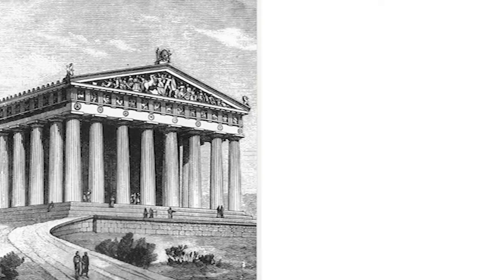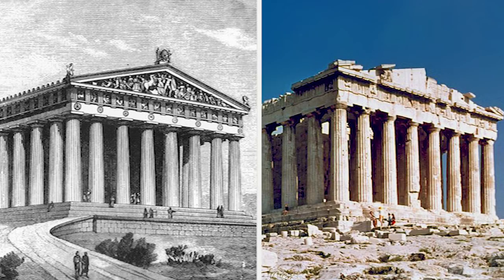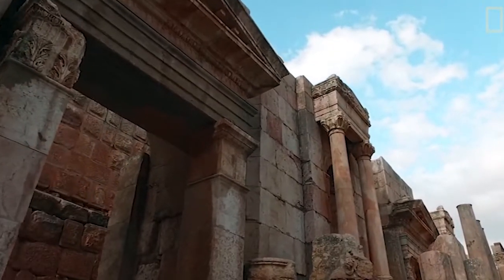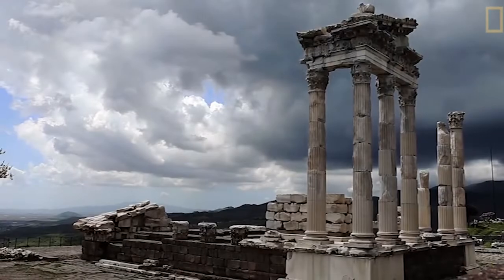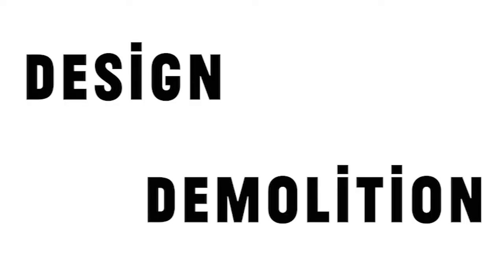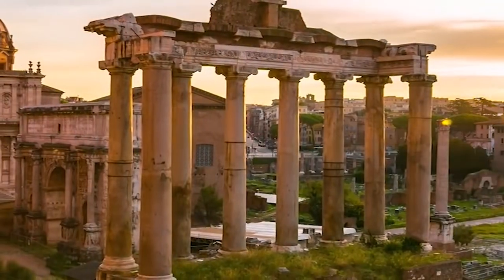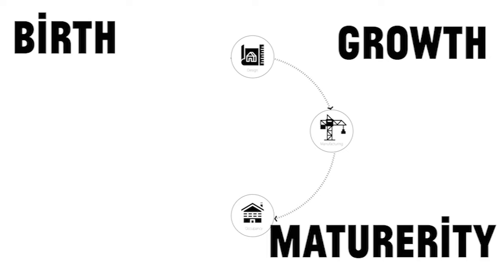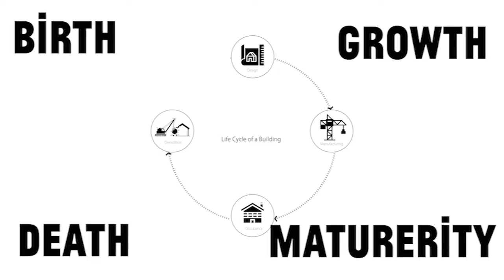Contrary to the view that architecture ought to be a fixed state of being, the reality is far from that. As buildings are rarely permanent, their combination of physical materials has a lifespan that will degrade over time, beginning with the design and ending with demolition of the building. We not only witness but also engage in the life cycle of a building, from its birth, to growth, to maturity, and finally to its death.